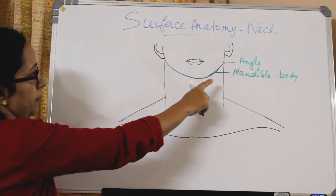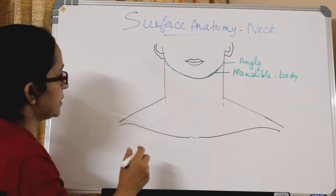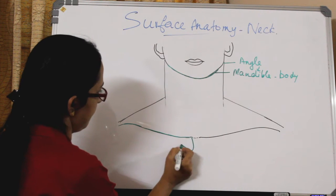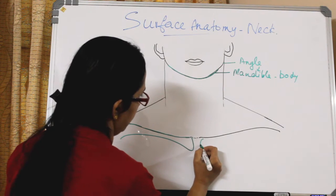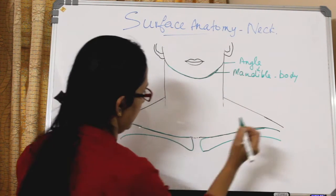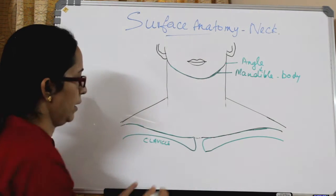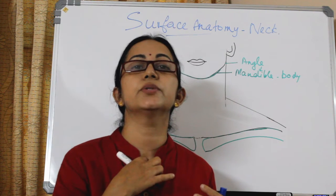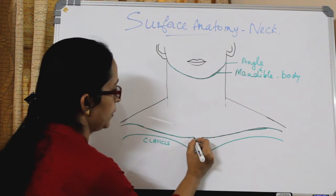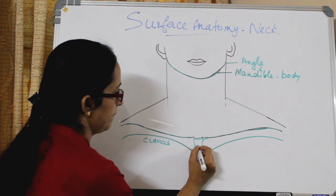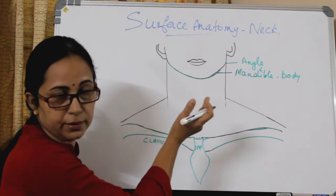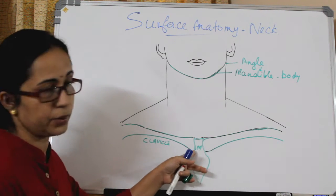After the angle and body of mandible, we have the clavicle. Two clavicles, and in between the clavicle this bone is the sternum — specifically the manubrium sterni. The lower limit of the neck is the sternum and also the manubrium in between.